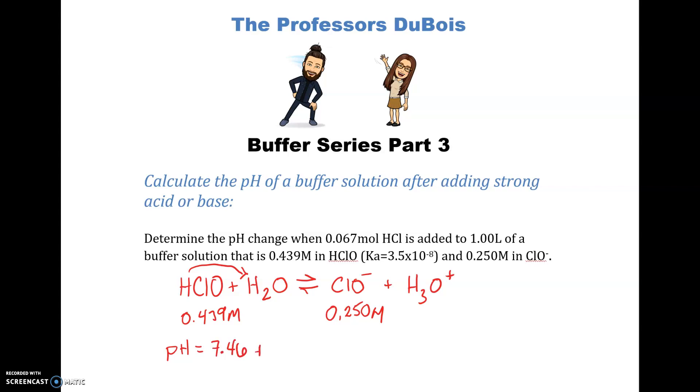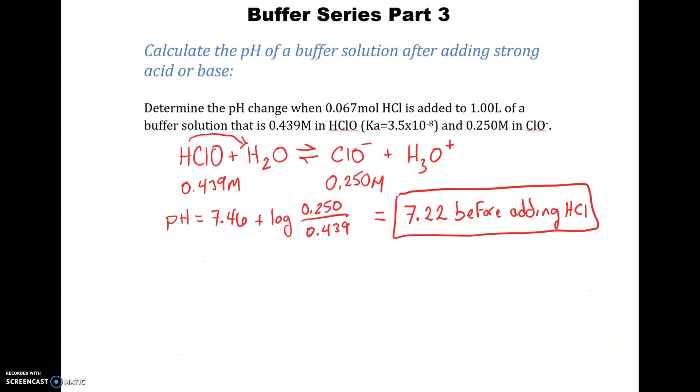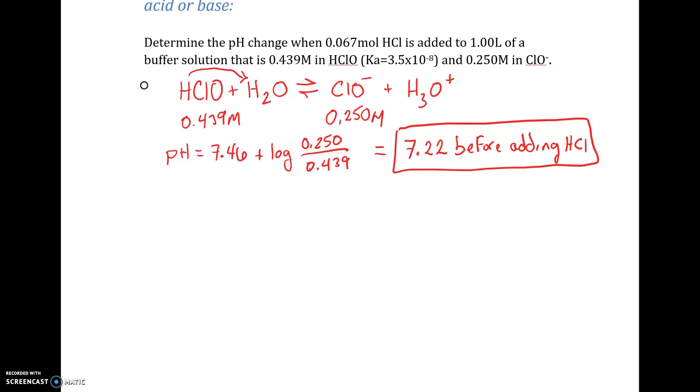We need the pKa in this equation. So pH equals pKa of your weak acid. The pKa you can get from taking the negative log of your Ka, which was provided. So if you take the log of 3.5 times 10 to the minus 8 and take the negative of that, that's where the 7.46 came from. Then you add the log of the ratio of your base to your acid. When working with Henderson-Hasselbalch, you can have molarity of base divided by molarity of acid, or you can have it in moles. In this case we have molarity, so we're just going to put that in and solve for the pH before we add any HCl.